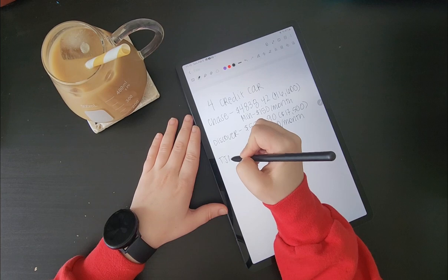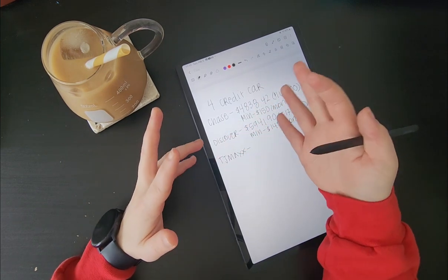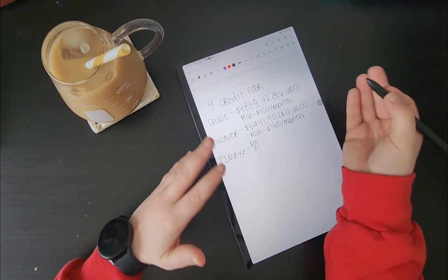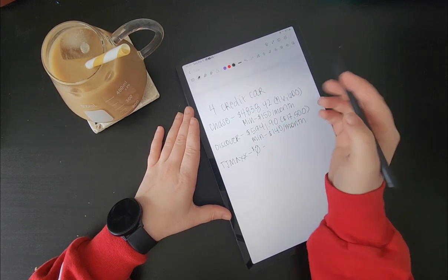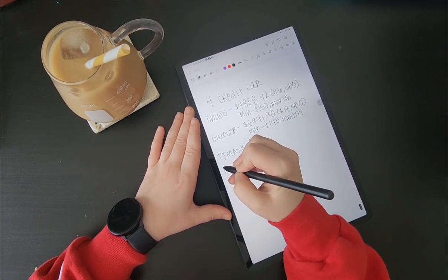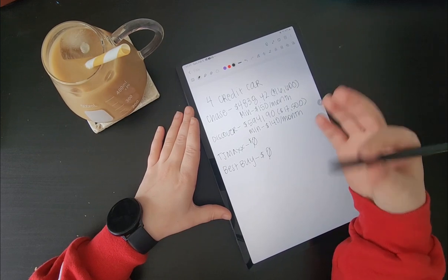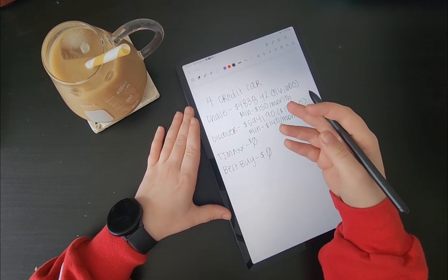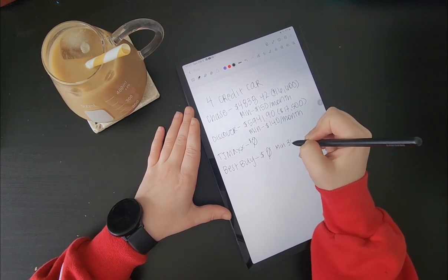My fourth credit card is a TJ Maxx credit card, TJ Maxx, Homegoods, Marshalls, that family of stores. And that currently has a balance of $0 because I only use it for very specific things when I go to those places. And I don't remember what the total line is on that. But it doesn't really matter to me because I don't use it very often. And then my fourth credit card is a Best Buy credit card. Again, has a zero balance because I only use it for specific things. And I recently paid that one off. My minimum was $30 with that one.